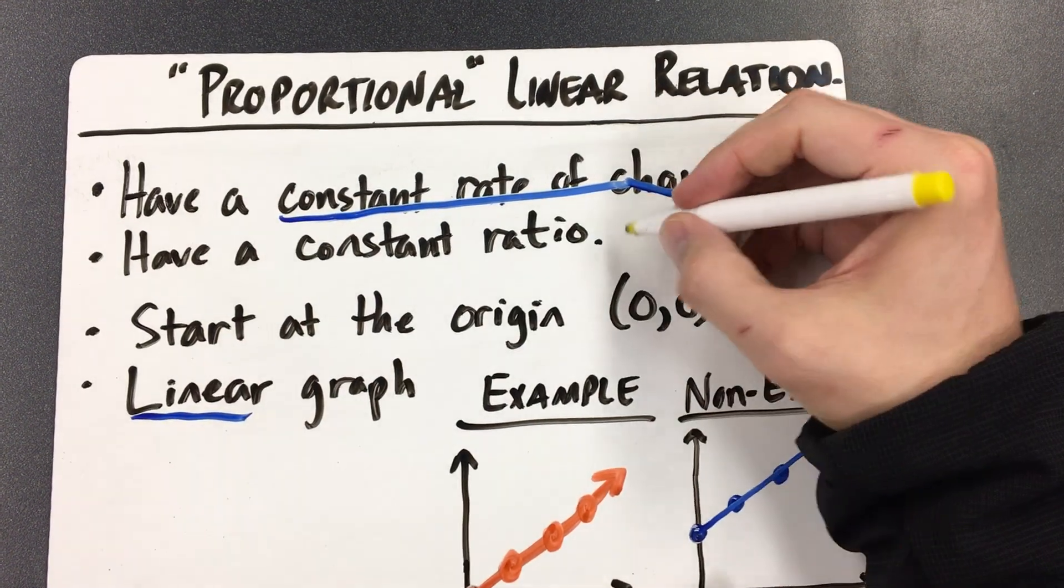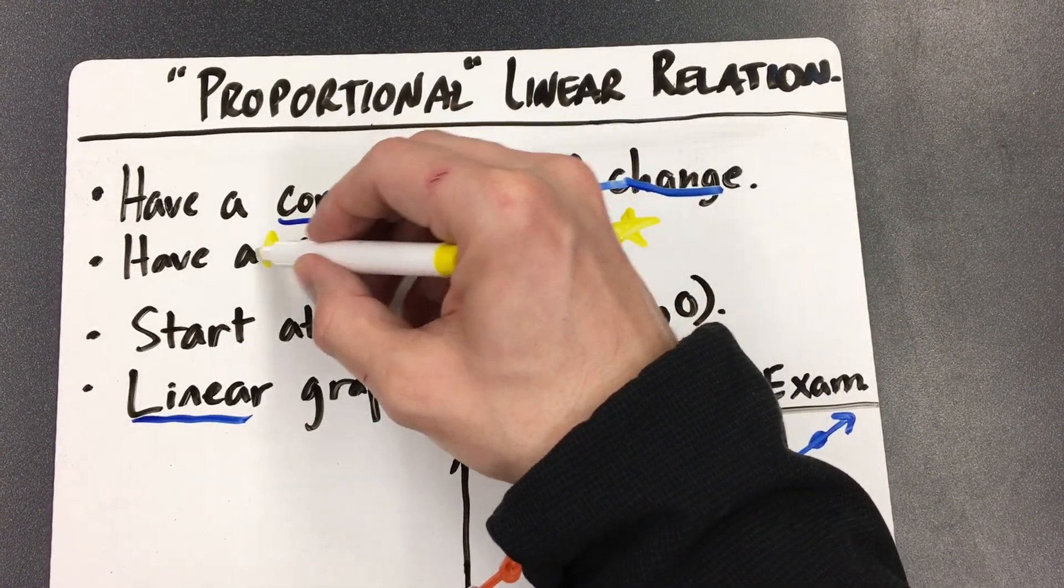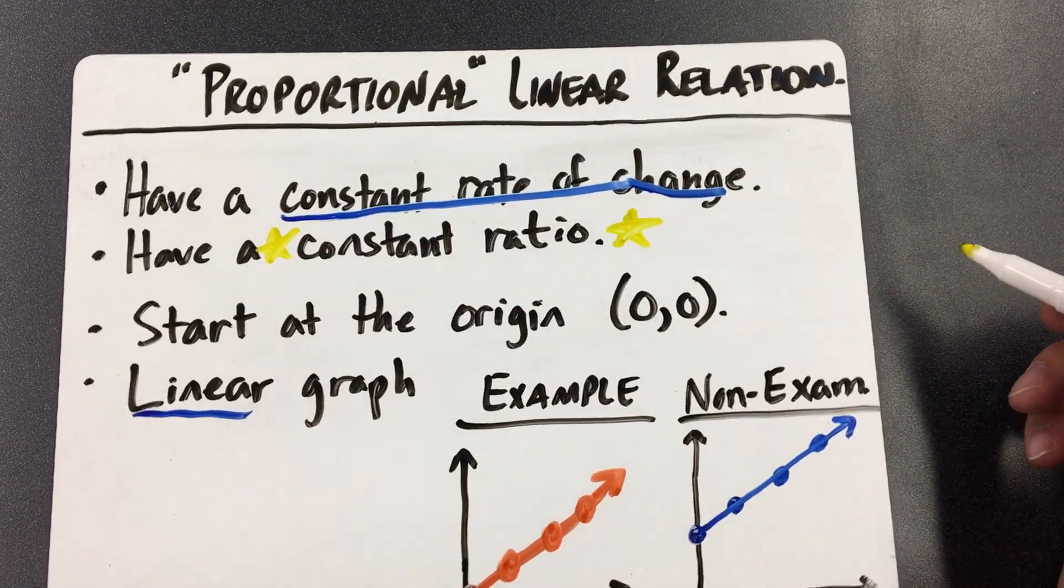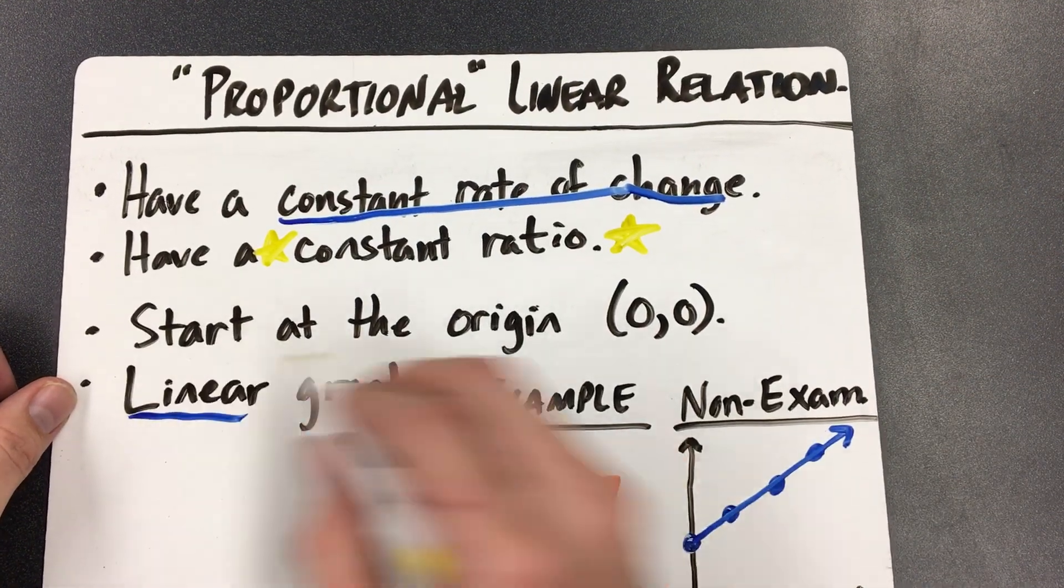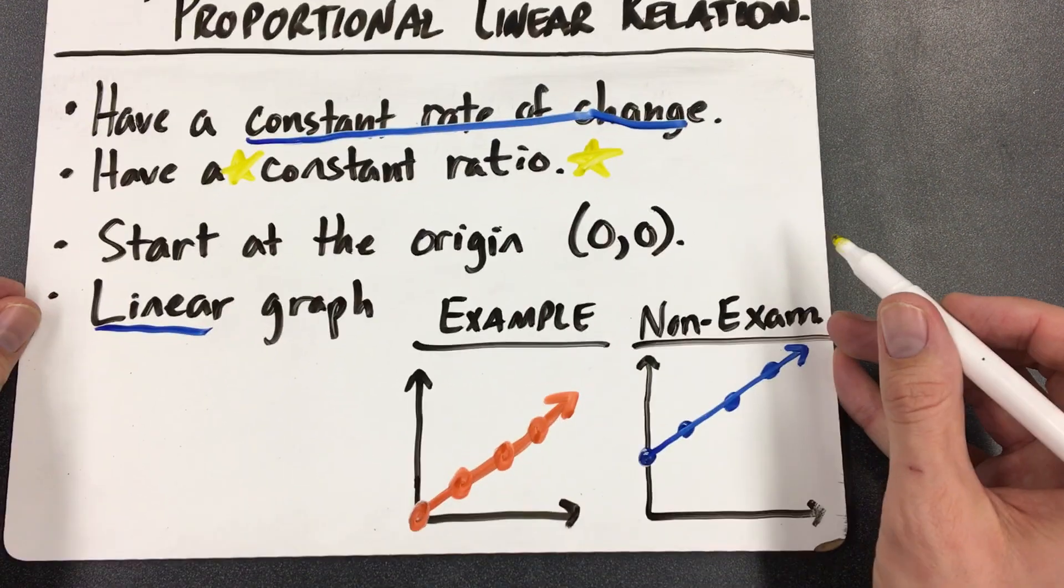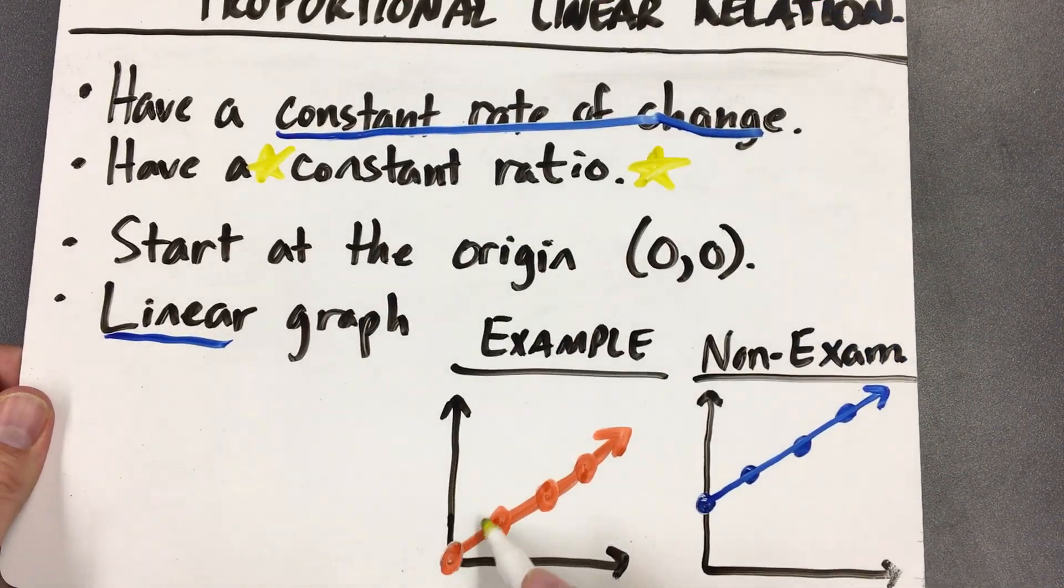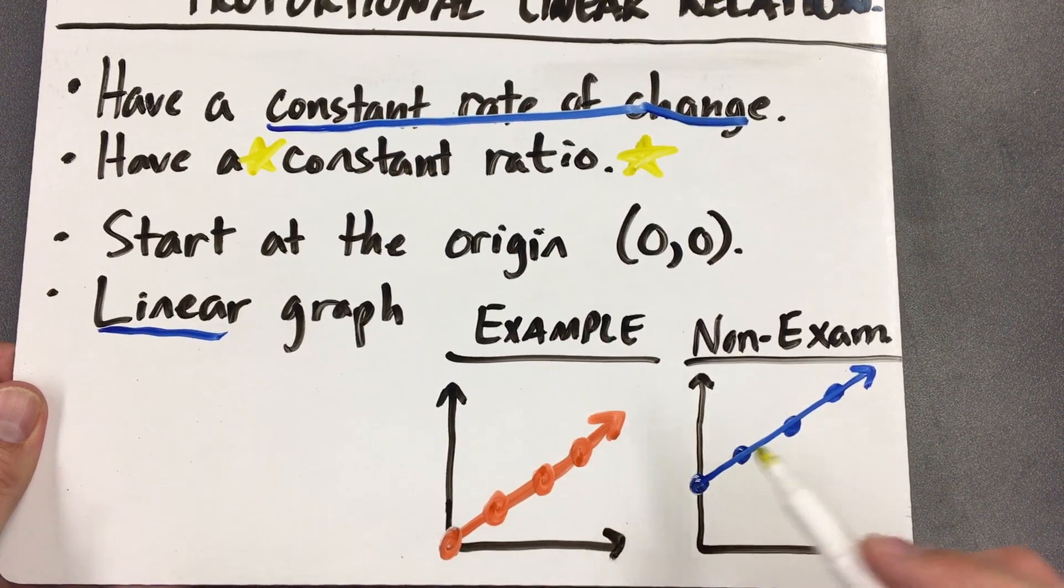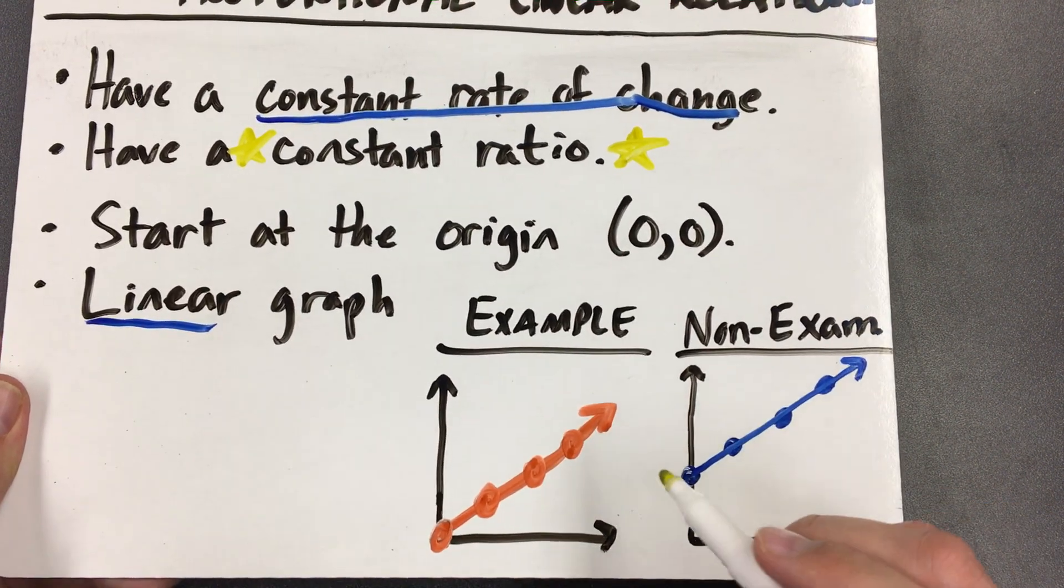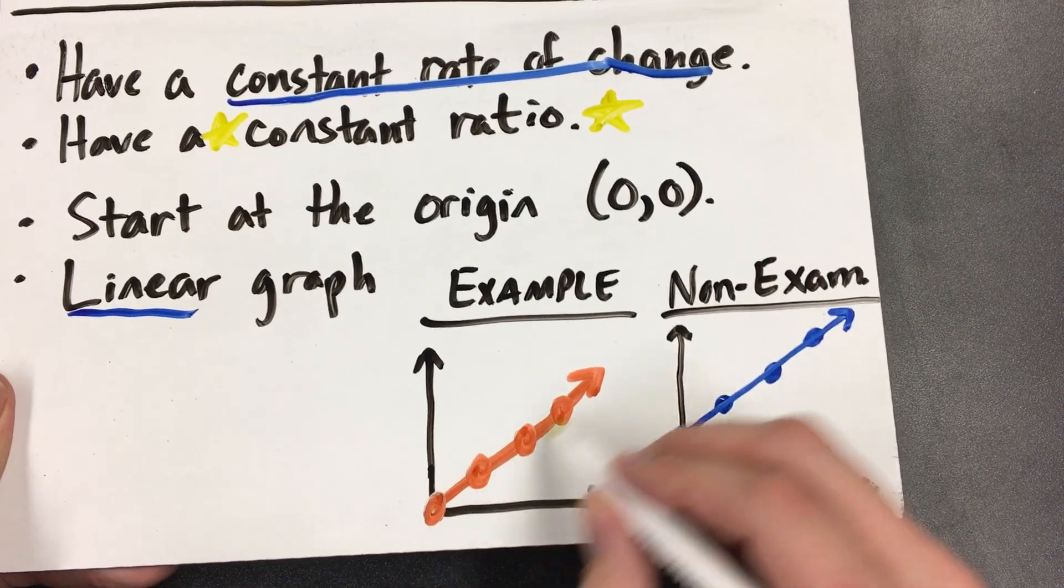A proportional linear graph is like a special version of the ones we saw yesterday and it has some special characteristics. It has something called a constant ratio. That's going to be the big topic today. What is a constant ratio? And then what does that mean whenever you look at it? Well, it means if you had a graph, it would start at the origin. Like here's an example. It starts at the origin, the origin right there, and it is in a straight line.